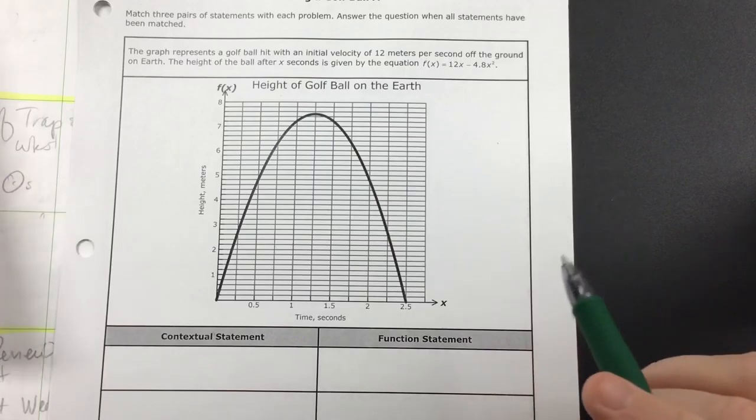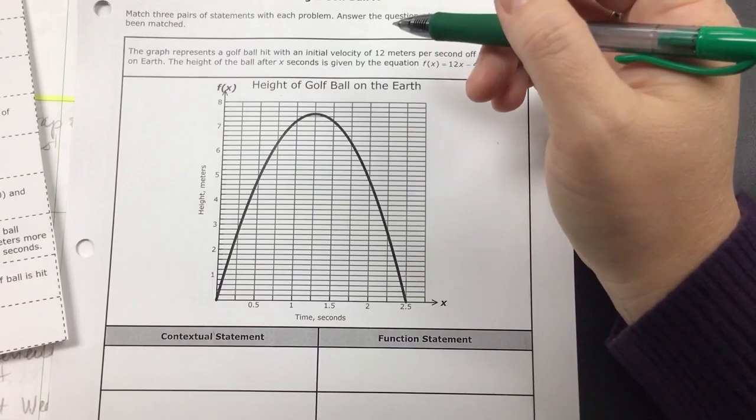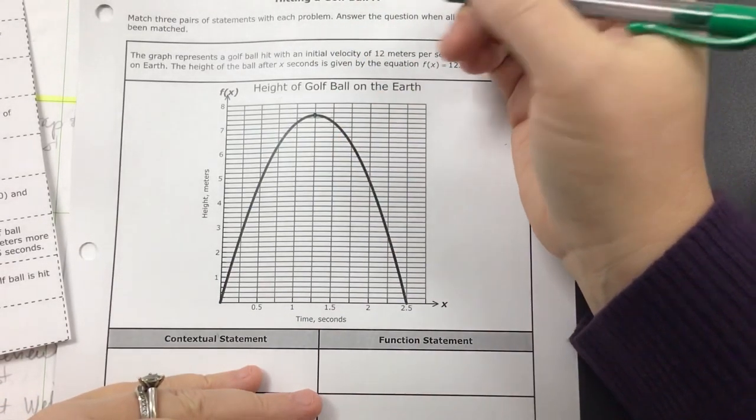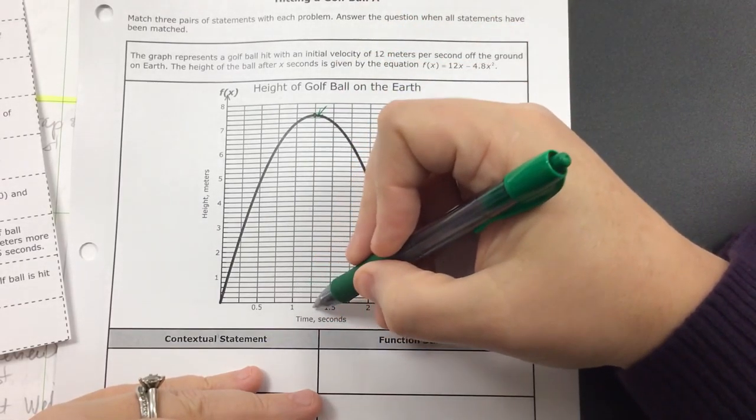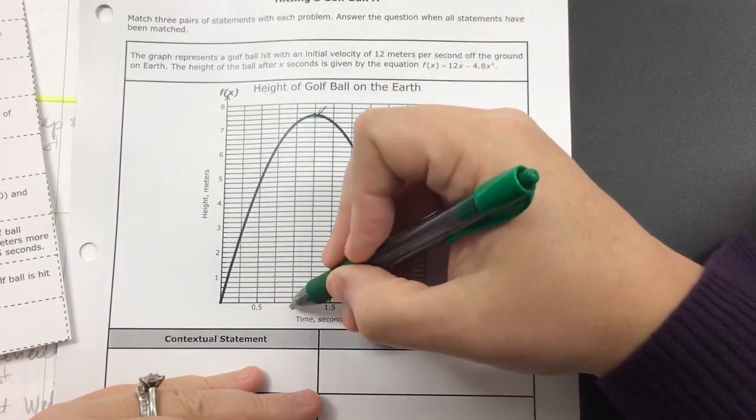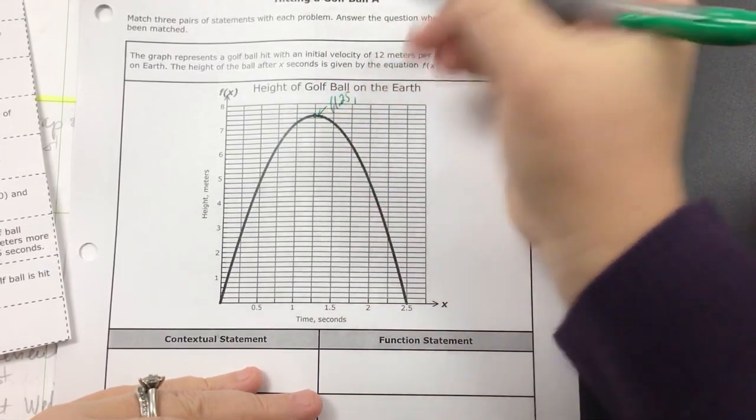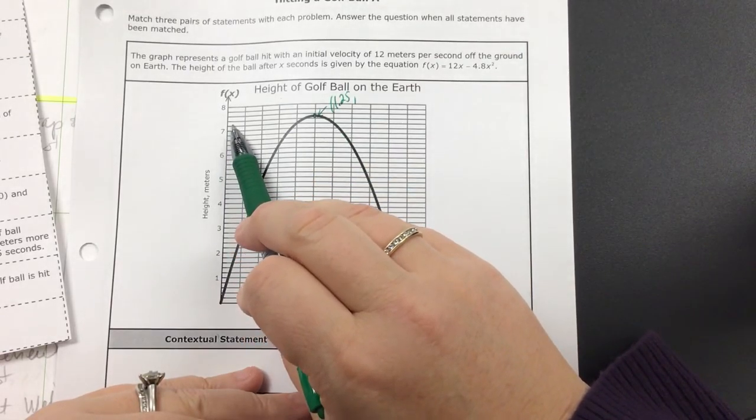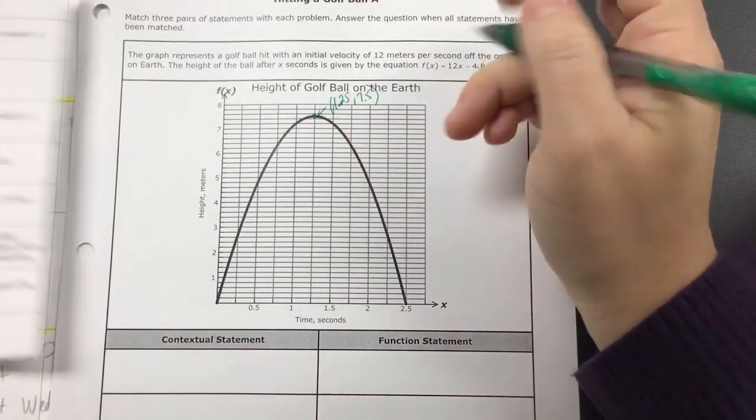Okay, so if I look at some options here. So first off, what sticks out to me is that this is the vertex of the function. So if I had to guess that vertex has an x coordinate, well, what's in the middle between one and one and a half? It would be 1.25. And let's see here, there's seven, so there's eight. So I'm going to guess that's about seven and a half, something like that.